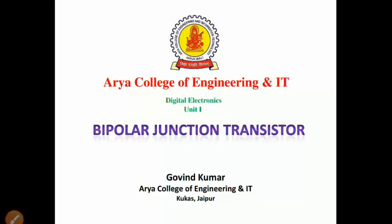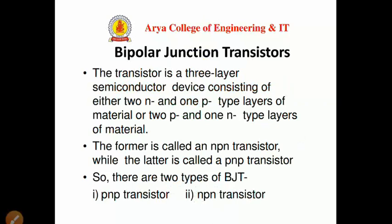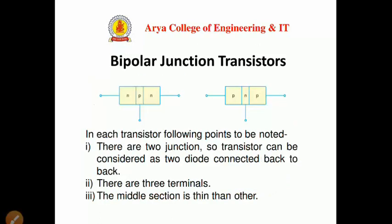Hello students, this is Govind sir and today we are discussing our next topic: the bipolar junction transistor. This is from the first unit of digital electronics. The transistor is a three-layer semiconductor device consisting of either 2N and 1P type layers or 2P and 1N type layers of material. The former is called NPN and the latter is called PNP transistor.